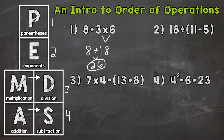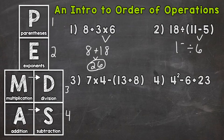Let's move on to number two, where we have 18 divided by parentheses, 11 minus five, end parentheses. Do we have any parentheses? Yes — so that's where we need to start. We have to do parentheses first. So 11 minus five is six. Bring down everything we didn't use: the division sign and the 18. Now we're left with only division — 18 divided by six is three. And that's our final answer.